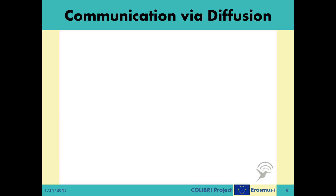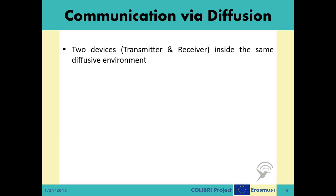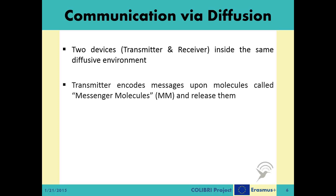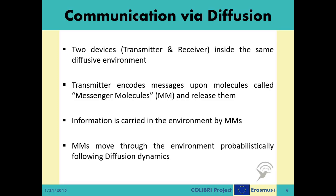After giving a general look at one of the diffusion-based intercellular communication systems, let us define the communication via diffusion system. A basic CVD system is comprised of two devices — one transmitter and one receiver — both of which reside in the same diffusive environment. The transmitter device encodes the information upon special molecules called messenger molecules, and releases them to the diffusive environment. These messenger molecules, or MMs for short, move through the environment following the diffusion dynamics in a probabilistic fashion. Some of them arrive at the receiver and trigger the reception and decoding process of the initial message.